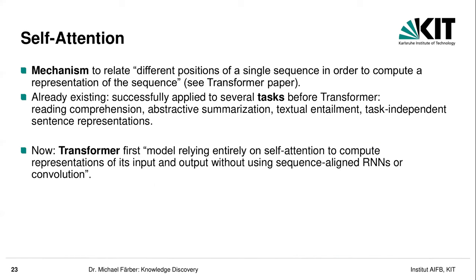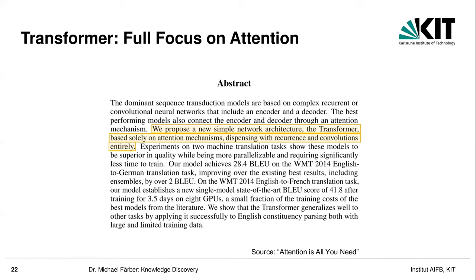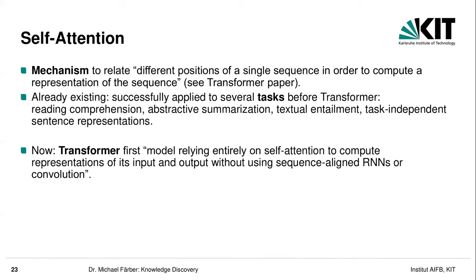One part of how to not depend on recurrence and convolutions anymore is the so-called self-attention mechanism. The authors describe it as a mechanism that relates different positions of a single sequence in order to compute a representation of the sequence. Self-attention, also often named intra-attention, means that items in the sequence know each other. Self-attention had already been applied for several tasks before the transformer — reading comprehension, abstractive summarization, and other NLP tasks. But transformers were the first model relying entirely on self-attention.